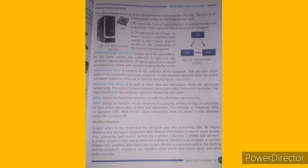Now let us discuss the components of the Central Processing Unit (CPU). The CPU has three main components: the Arithmetic Logic Unit (ALU), the Control Unit, and the Memory Unit, which includes ROM and RAM. The ALU does all the calculations. As the name implies, it also performs logical operations, which are comparisons or decision-making like yes or no.